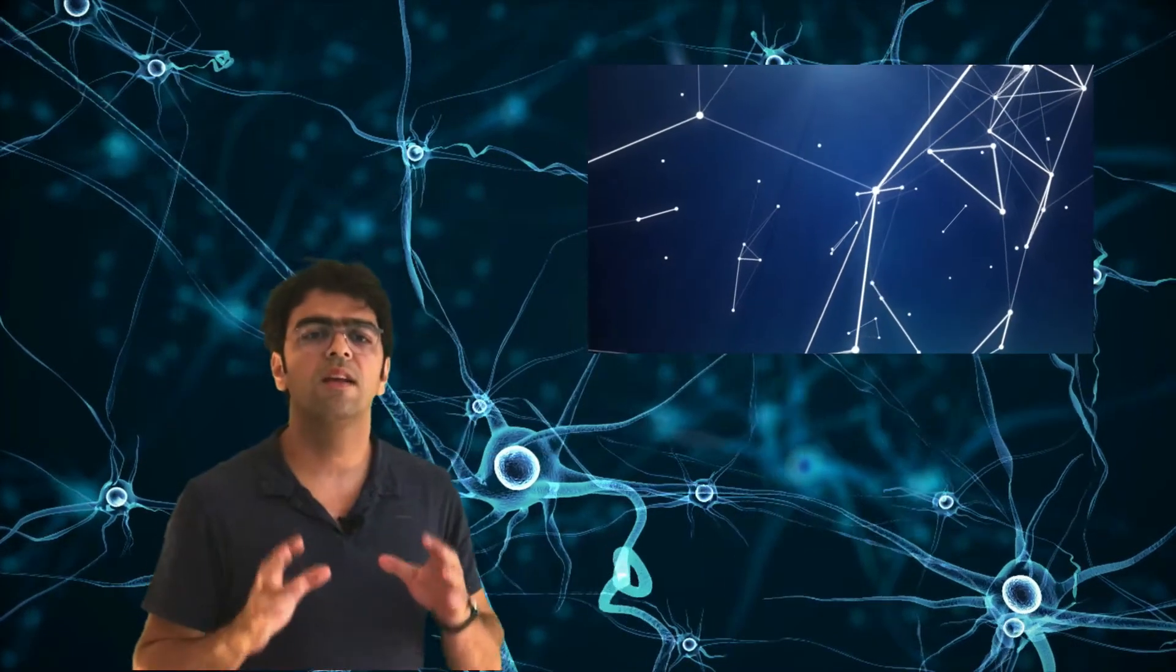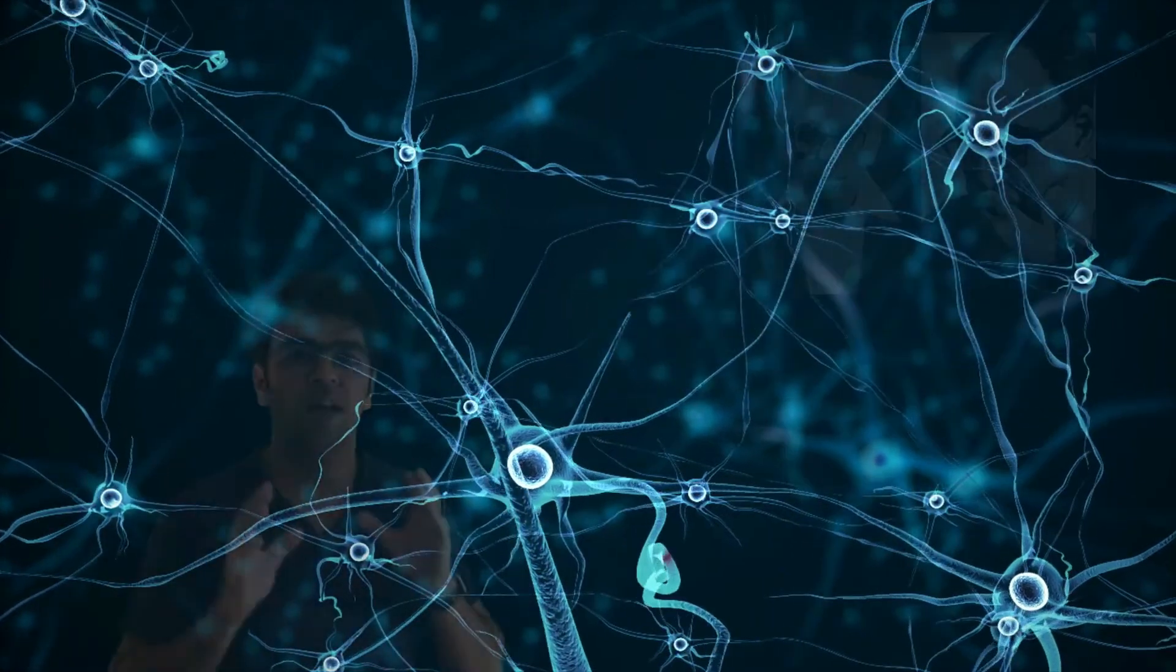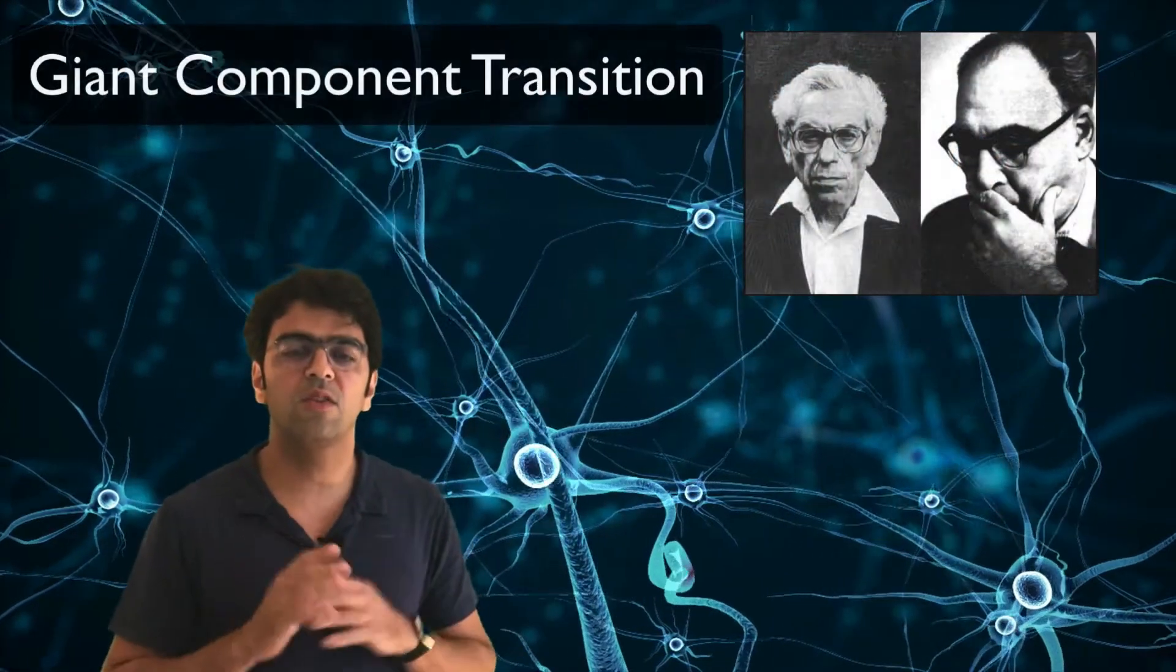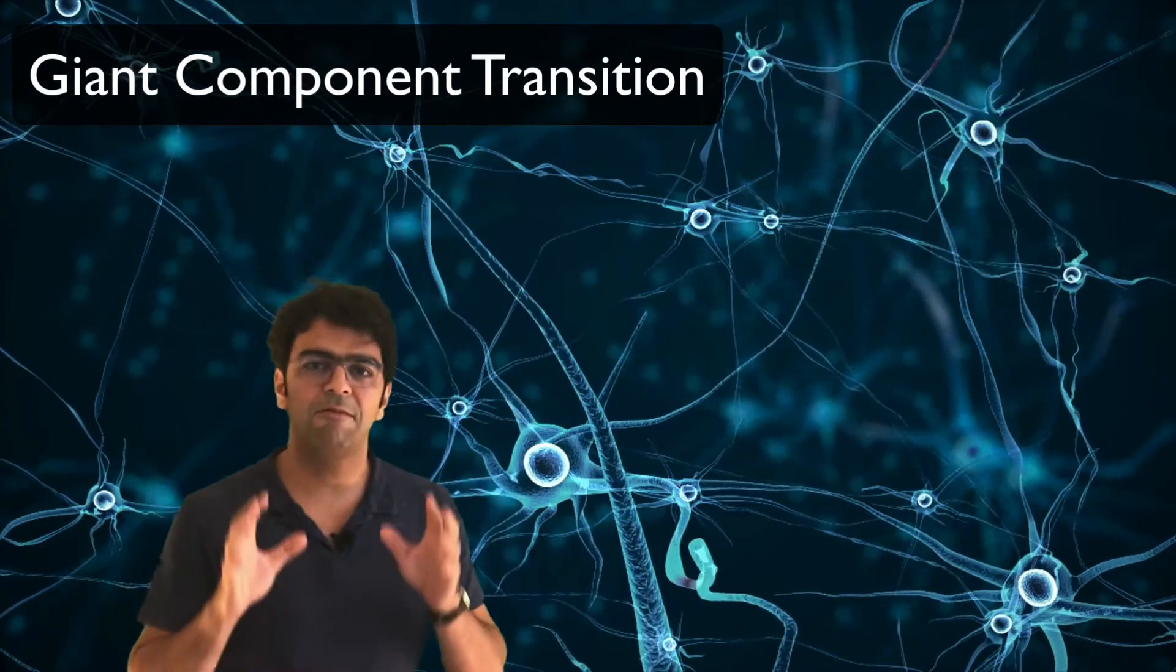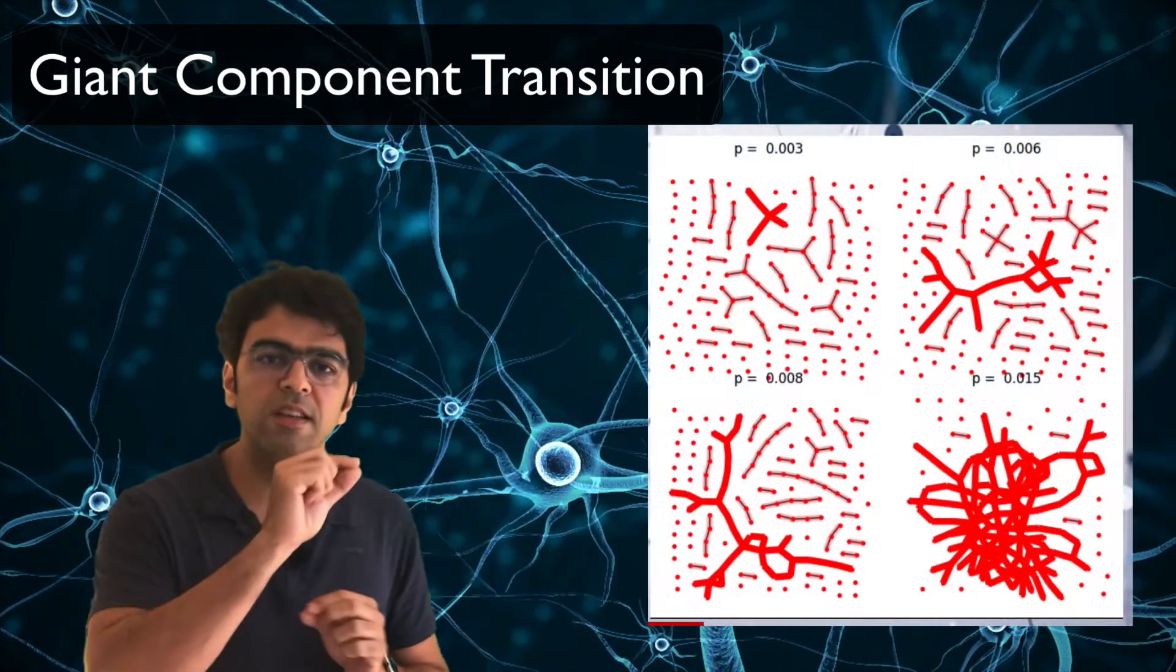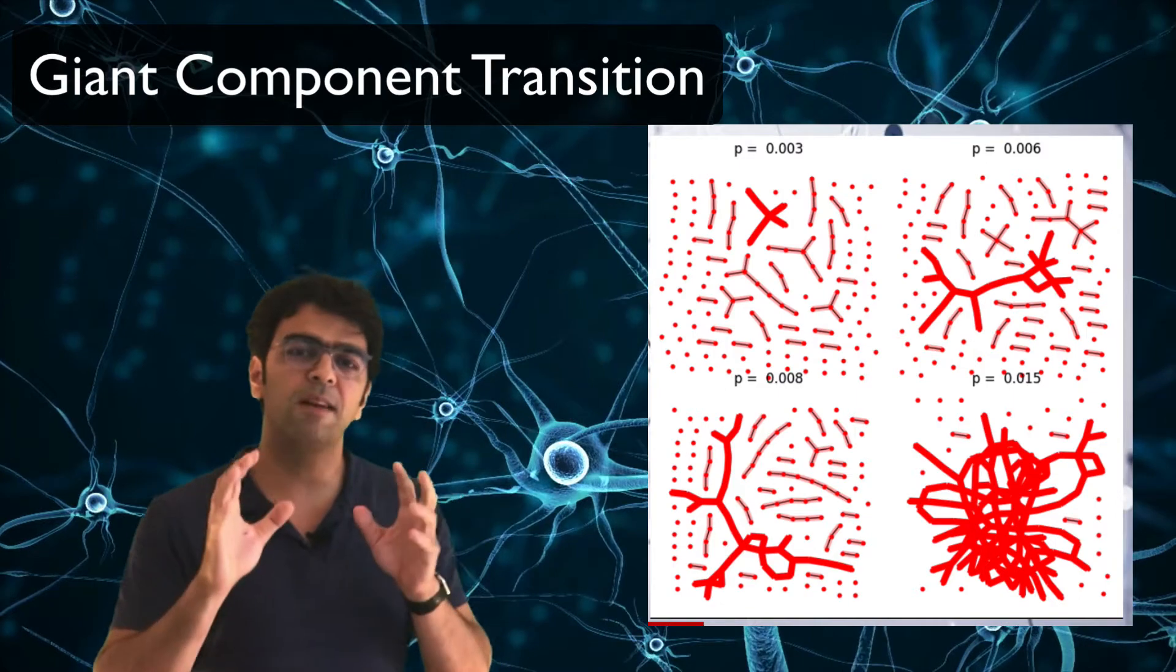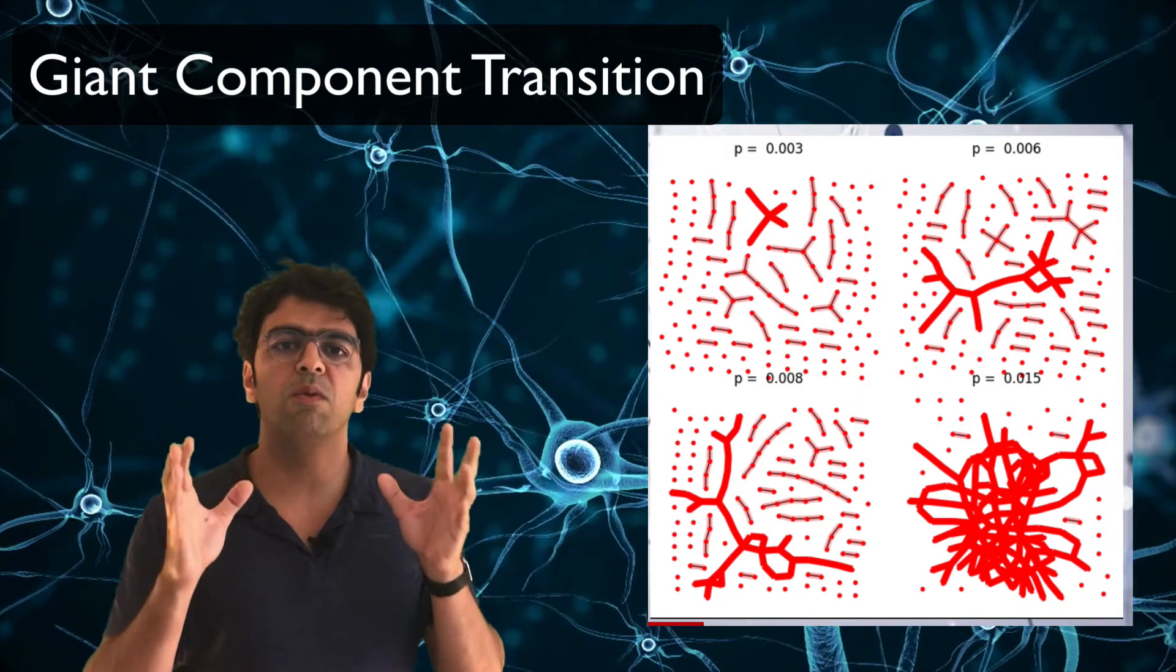On the other hand, phase transitions can also be studied geometrically in networks. Erdős and Rényi discovered the so-called giant component transition. That means that if I keep attaching links in a random graph and increasing the probability p, I will find a critical probability value where a giant component will emerge.